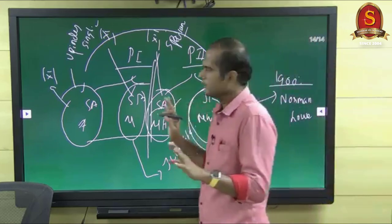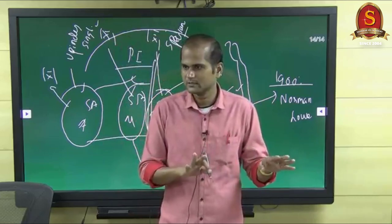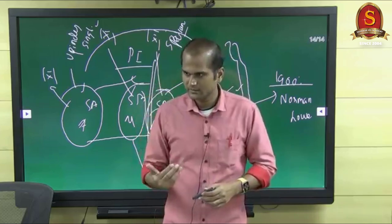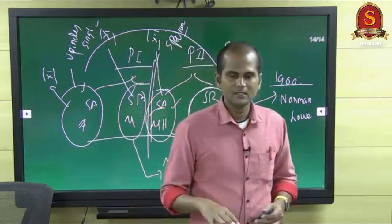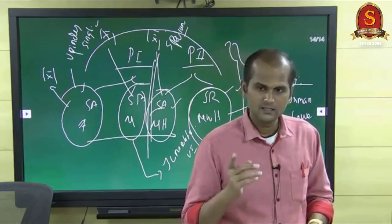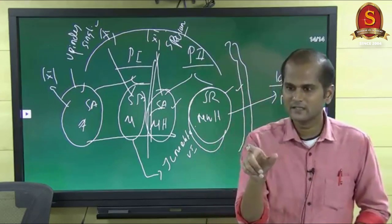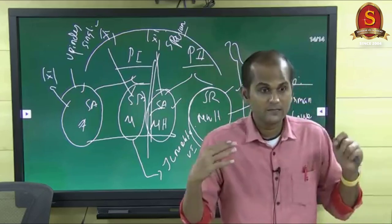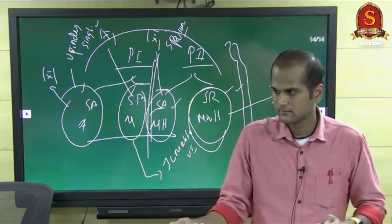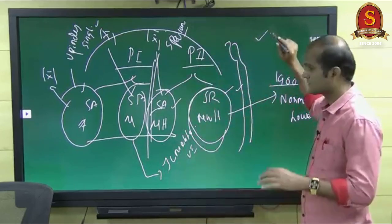Class timing is 5:30. Maximum class is 8 to 11 and 11 to 1:30. Then go take rest and lunch. By 4 o'clock study the GS class notes from 4 to 5. From 5 o'clock come here for the 5:30 to 8 class. Then go back, have dinner, and from 9:30 to 10:30 study the optional class notes — no need to study the book on weekdays. Study the optional book during weekends or in the 15-day gap.